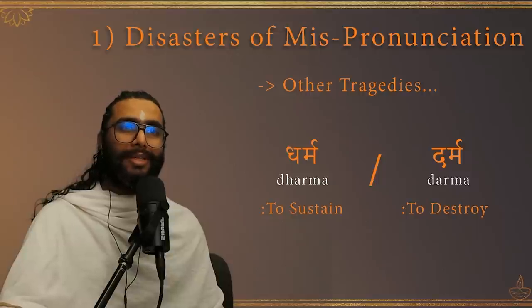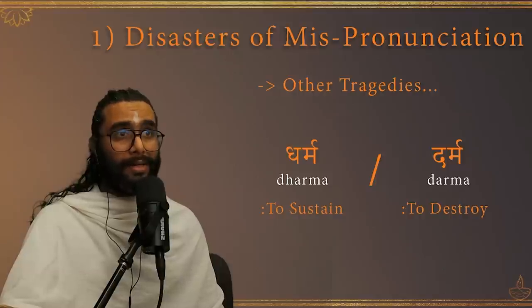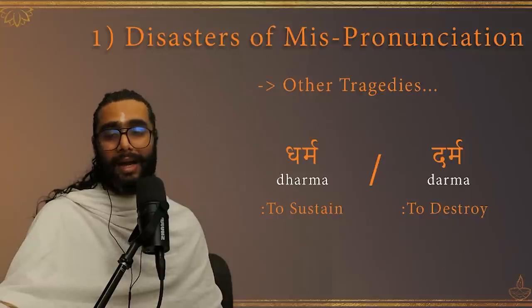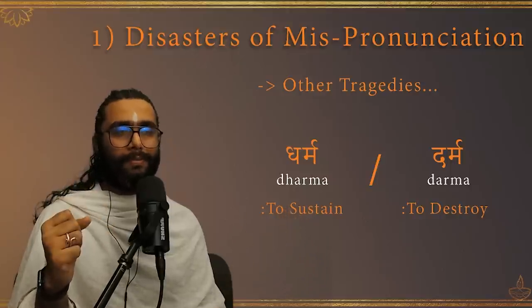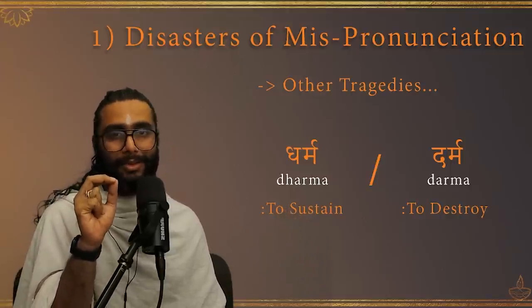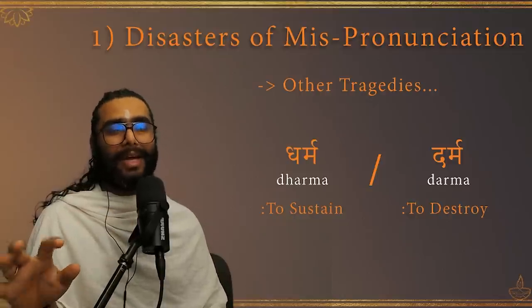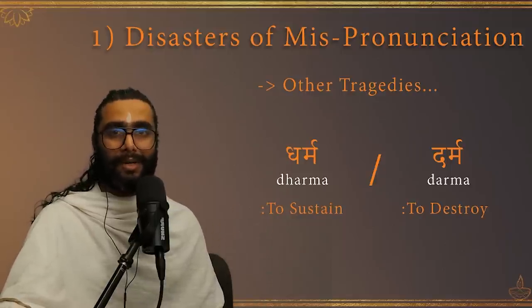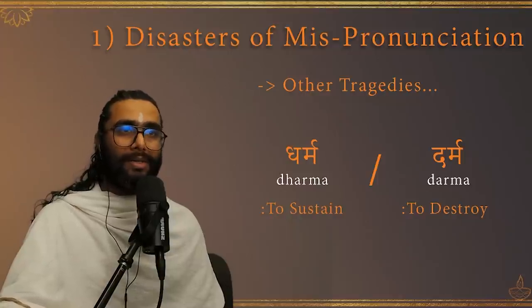The sound 'da' is an alpa prana, while 'dha' is a maha prana. So 'dharma' — dharyate, dharti, dharana — dharma is that which sustains, that which helps in growth. But 'dharma', where 'da' is not used but 'da' is used, means to destroy, to annihilate — it is the same root as 'damana', to put down, to destroy. So the interchange of maha prana and alpa prana sounds is a tragedy.